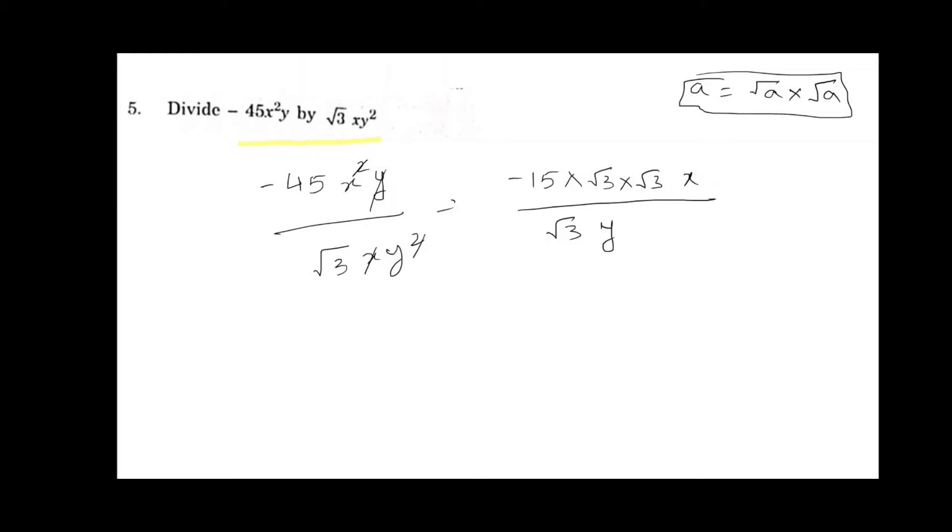So by using that we are writing 3 as root 3 into root 3. Now we can cancel the root 3. So the answer is minus 15 root 3 x by y.